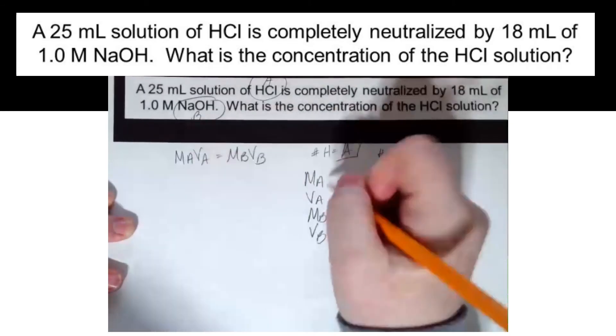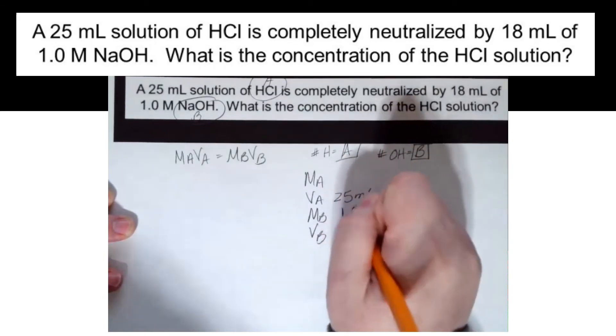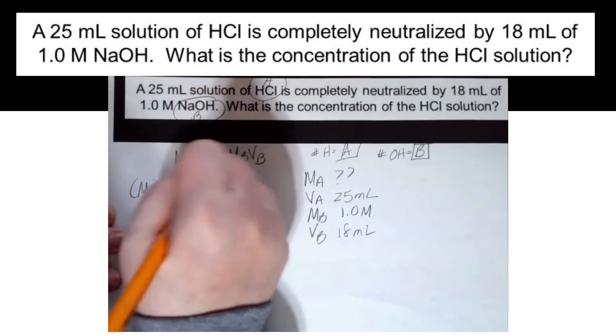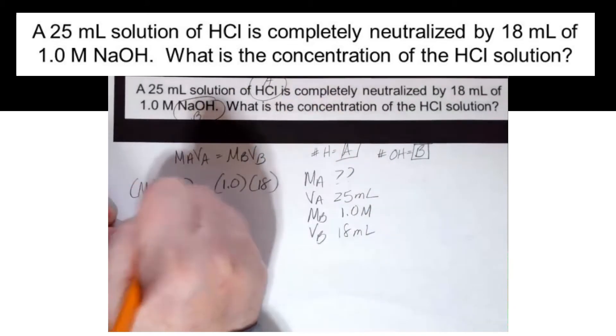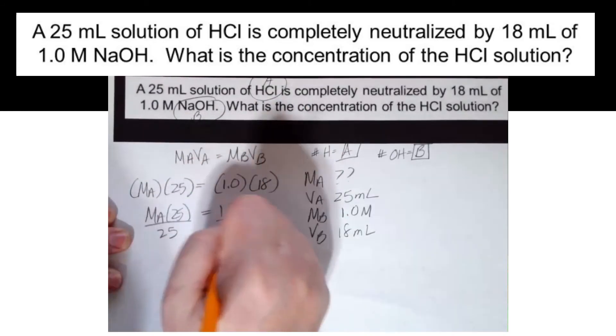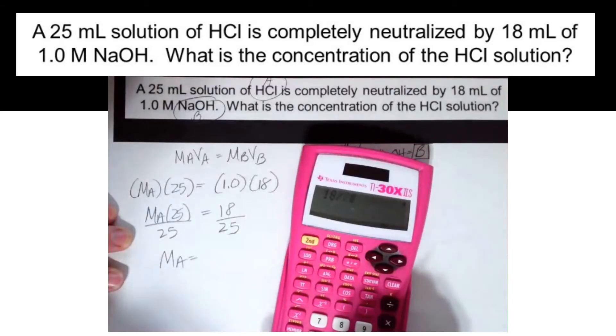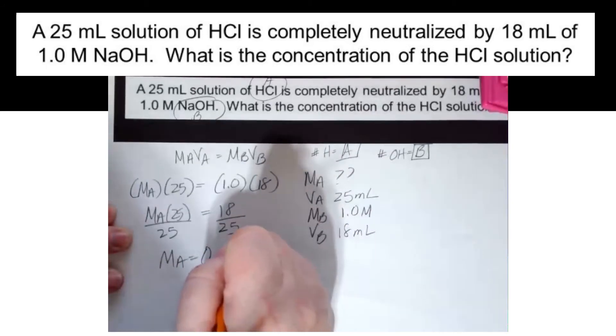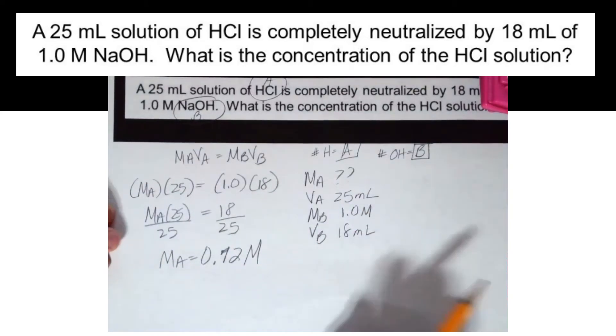Volume of my acid 25 milliliters. I have 18 milliliters and it's 1.0 molar. That's what I'm trying to find. So MA times 25 equals the molarity 1.0 times 18. So MA times 25 equals 18. Divide both sides by 25. So the molarity of my acid is going to be 18 divided by 25, which is 0.72. Units are molarity. All my significant figures are 2. So that's it.